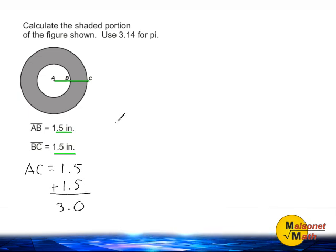Now that we know the radius of the larger circle we can proceed to find the area of that circle. 3.14 times 3 times 3 can be simplified to 3.14 times 9. 9 times 3.14 is 28 and 26 hundredths.